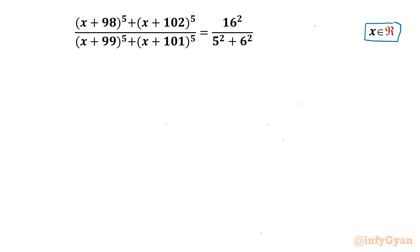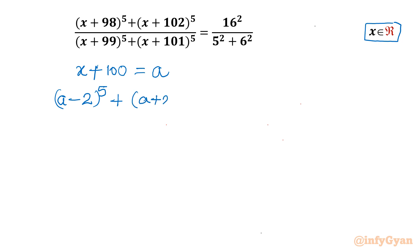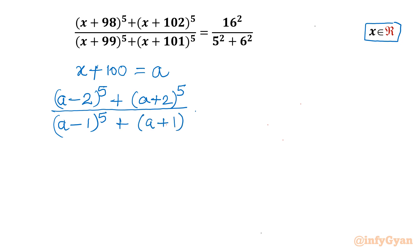Straight away I will use substitution because 98, 99, 100, 101 are big numbers, so we cannot directly use binomial expansion. Let me consider x + 100 = a. So on the left hand side I will write (a−2)^5 for x+98, (a+2)^5 for x+102 in the numerator, and (a−1)^5 for x+99, (a+1)^5 for x+101 in the denominator.